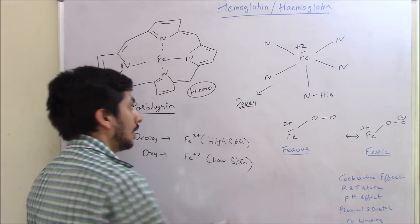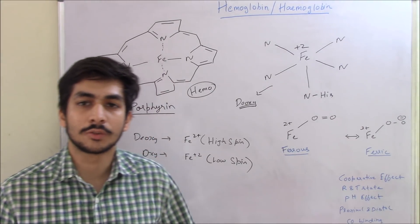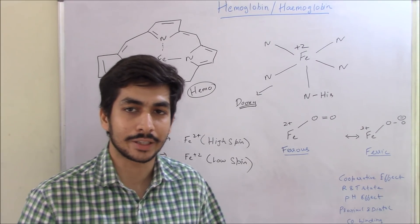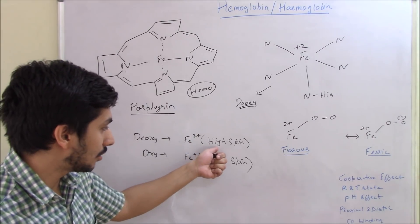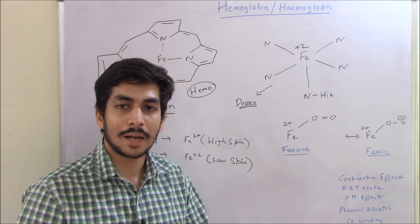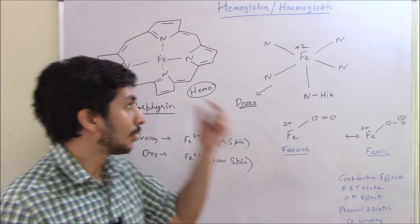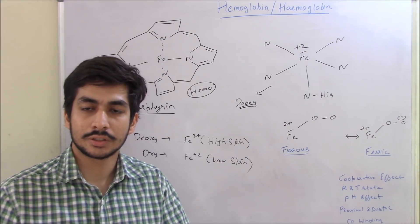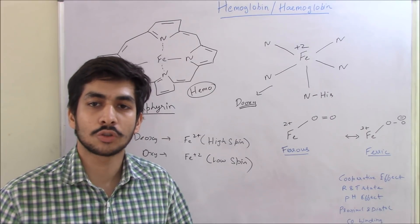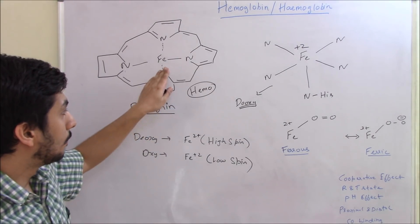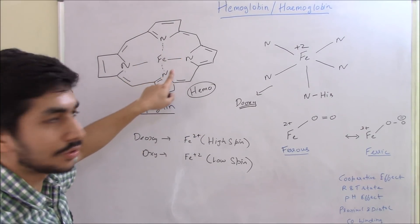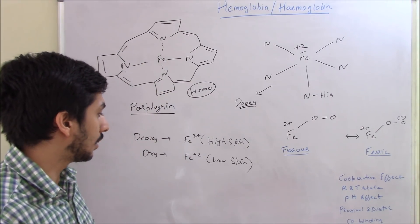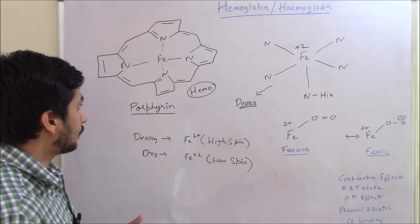There's one important concept to understand here: the cooperative effect, which is associated with hemoglobin. Once the high spin iron changes to low spin, something happens to the whole complex. Hemoglobin is a tetramer — it consists of four different peptide chains. That's why it's called a tetramer.